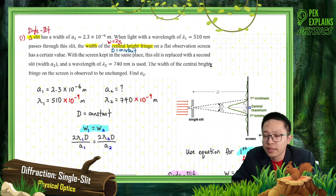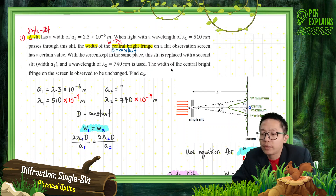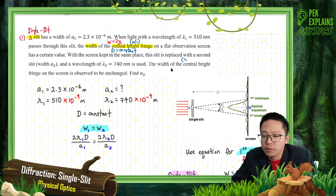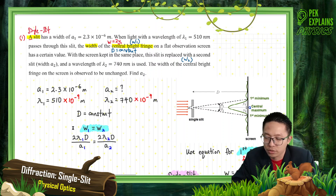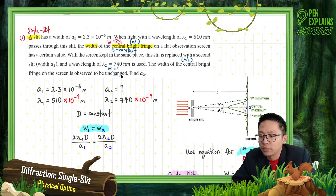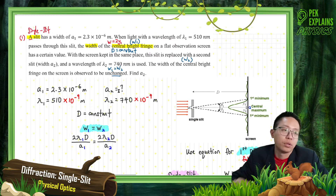The width of the central bright fringe is observed to be unchanged. So we can say the width is constant. We can put this as W1 and this one as W2. The width of the central bright fringe is unchanged, so W1 equals W2. Find A2 — you need to find A2.